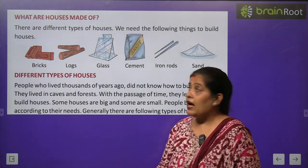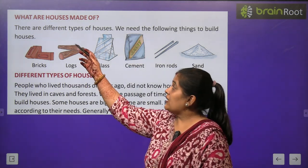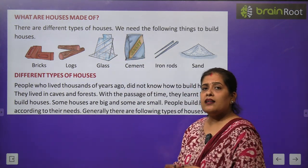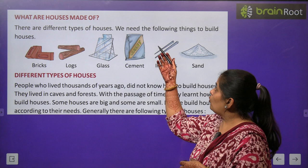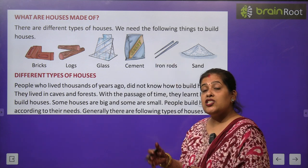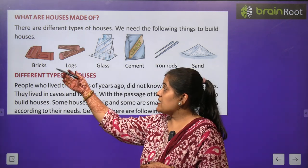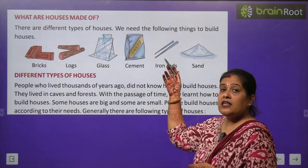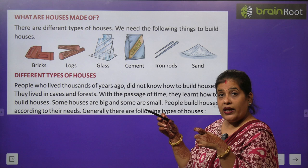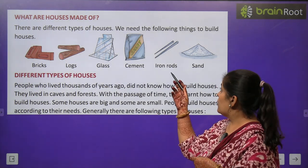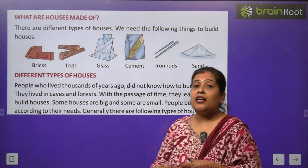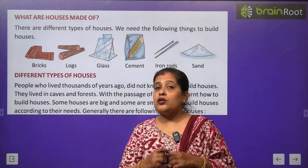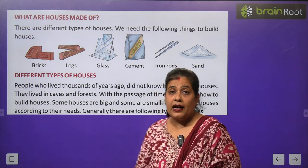What are houses made of? घर किन चीजों से बनता है? There are different types of houses. बहुत सारे अलग-अलग तरह की houses होते हैं और उनको बनाने के लिए अलग-अलग चीजों की जरूरत पड़ती है — जैसे brick, wood के टुकड़े, cart, cement, लोहे की सरियां, और sand. इन सब की जरूरत हमें घर को बनाने के लिए पड़ती है.